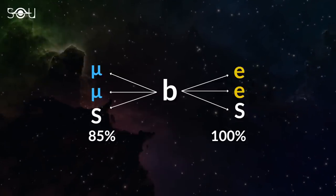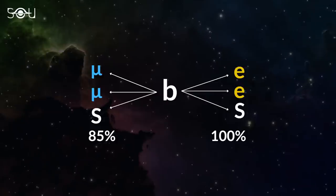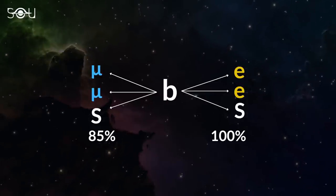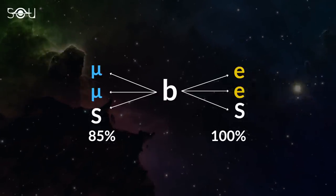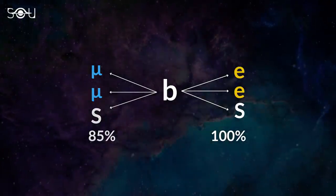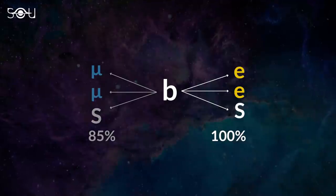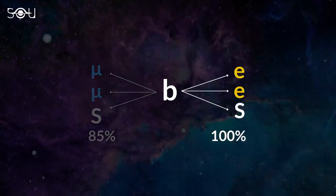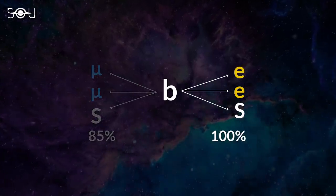But in March 2021, the researchers found that the muon decay was only happening about 85% as often as the electron decay. Nature seemed to be preferring one decay channel over the other, which is a violation of the law of lepton universality.